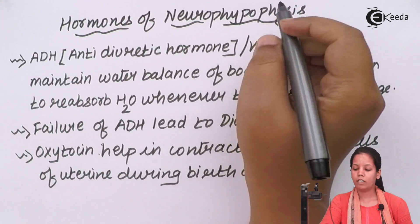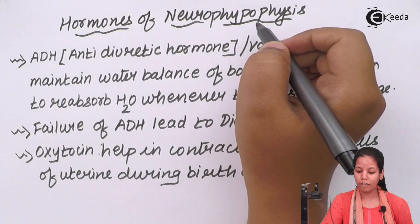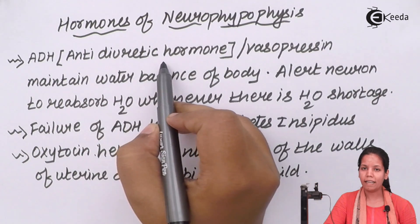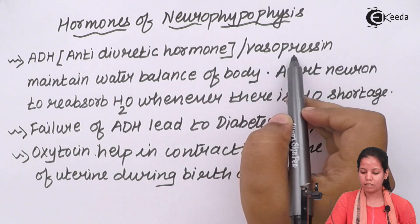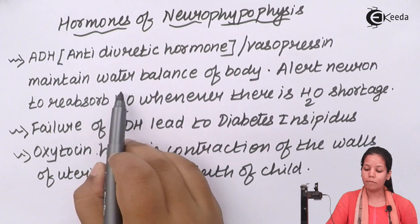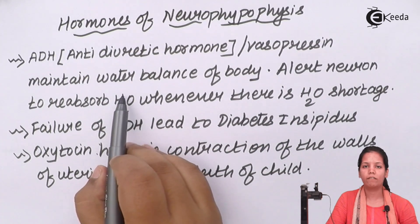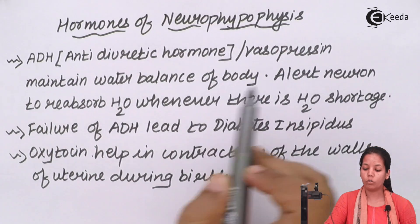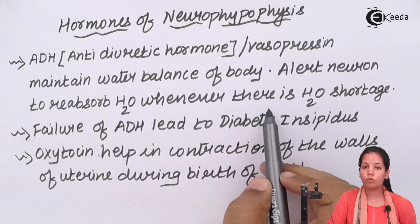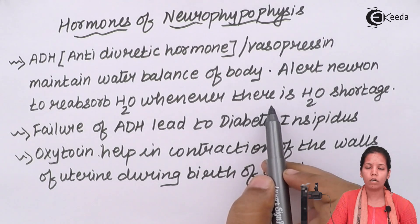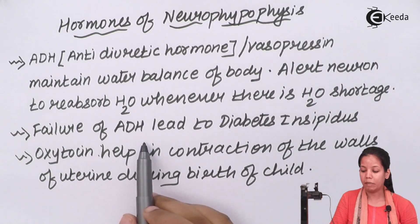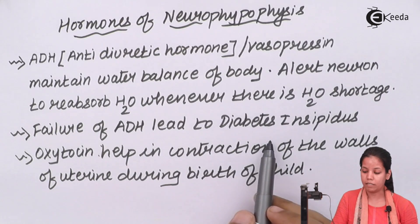Hormones of neurohypophysis include ADH, that's antidiuretic hormone or vasopressin. Vasopressin helps to maintain and regulate water levels inside our body. It alerts the nephron to reabsorb water whenever there is water shortage, especially during summers or if you are not taking the required amount of water. Failure of antidiuretic hormone or vasopressin may lead to diabetes insipidus.